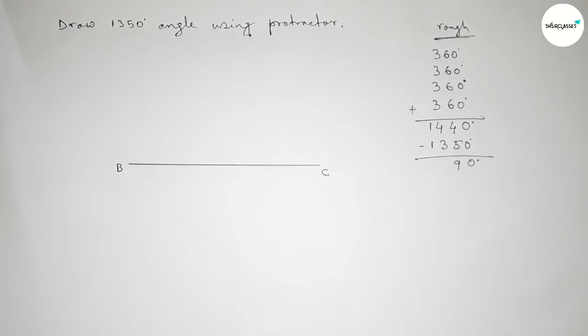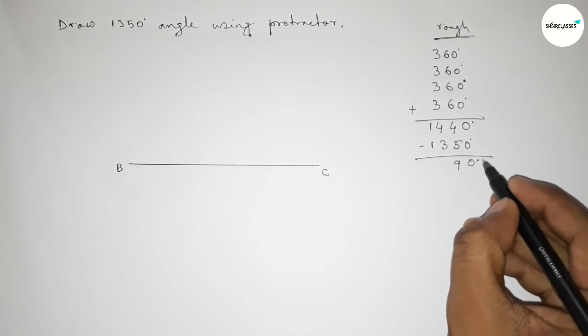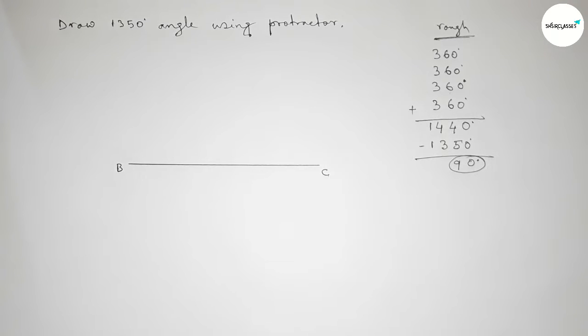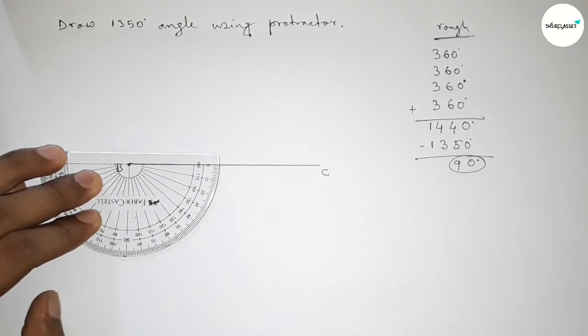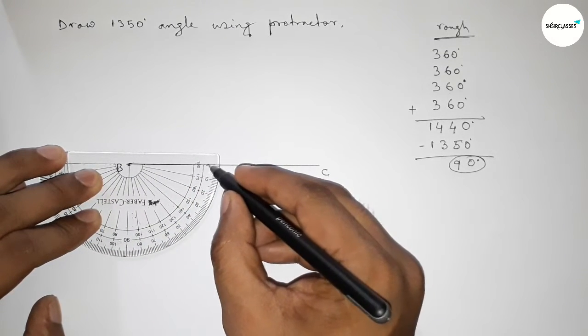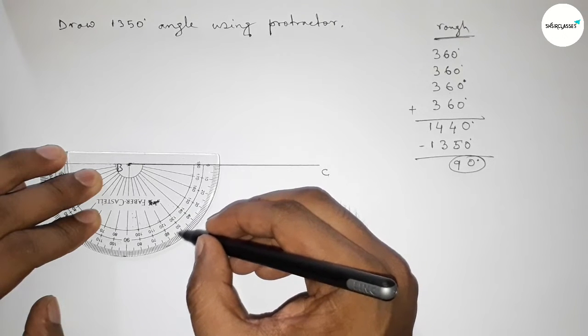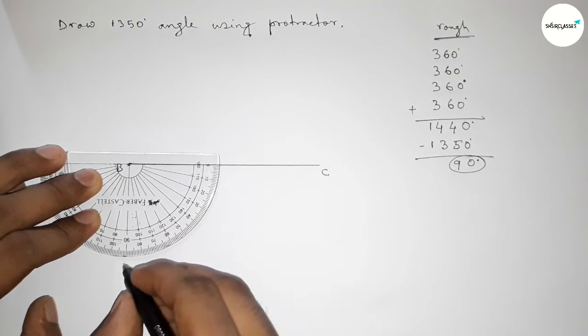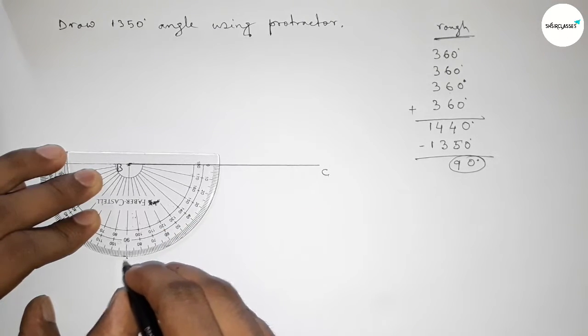So putting the protractor on the point B by this way and counting 90 degree angle from this point to here. So first counting 90 degree angle.